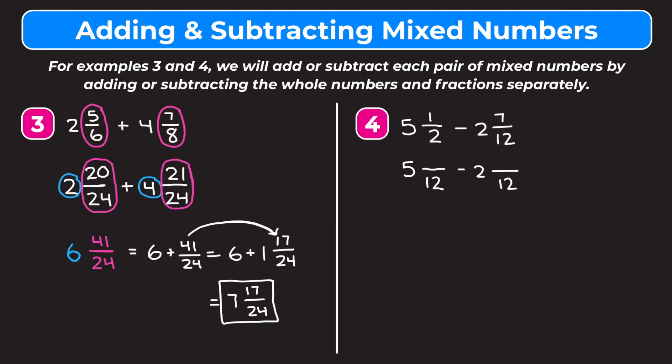We want both of our fractions to have denominators of 12. Our second fraction already has a denominator of 12 so we get to keep it as is. For 1 half we think how do we get from 2 to 12? We multiply 2 by 6, so we have to multiply our numerator by 6. 1 times 6 is 6. So now we have 5 and 6 twelfths minus 2 and 7 twelfths.